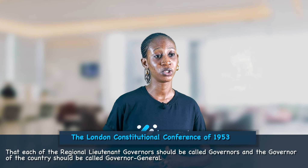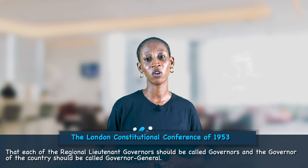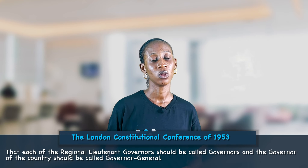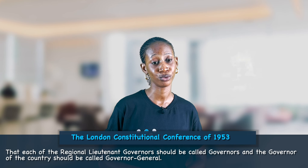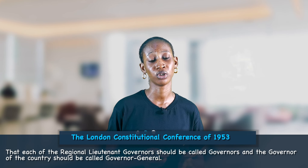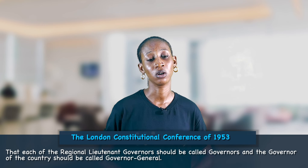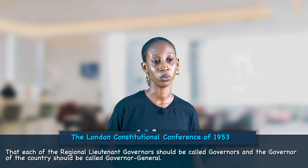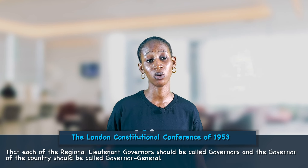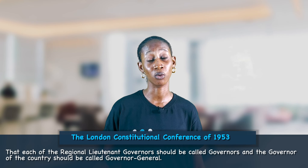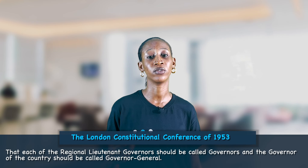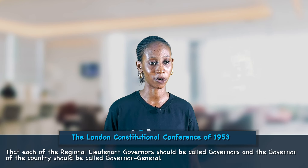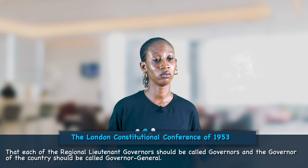Another agreement reached was that each of the lieutenant governors should be called governors, and the governor of the country should be called the Governor General. So the regional lieutenant governors were no longer addressed as such; they were now called regional governors or simply governors, while the overall governor of the country was called Governor General.